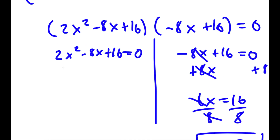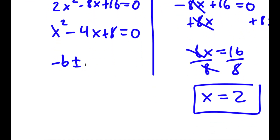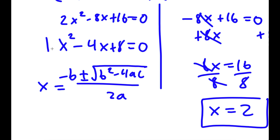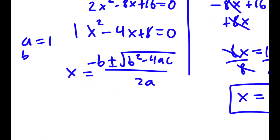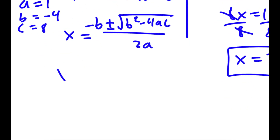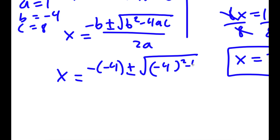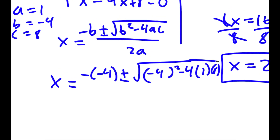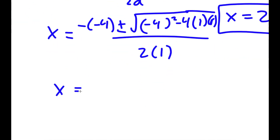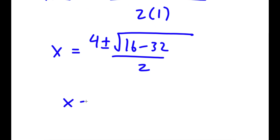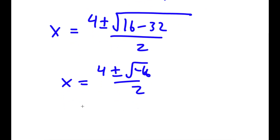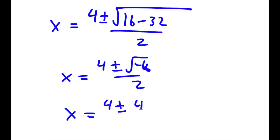For 2x squared minus 8x plus 16, I factor out 2 to get x squared minus 4x plus 8 equal to 0. Using the quadratic formula, x equals negative of negative 4 plus or minus the square root of negative 4 squared minus 4 times 1 times 8, all over 2 times 1. This equals 4 plus or minus the square root of 16 minus 32 over 2, which is 4 plus or minus the square root of negative 16 over 2, giving x equals 4 plus or minus 4i, all over 2.